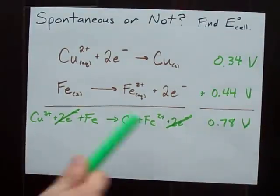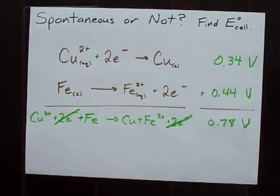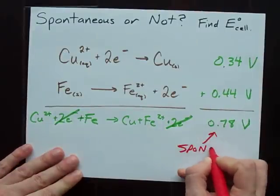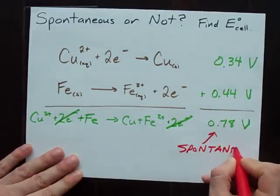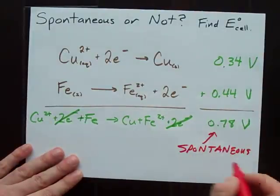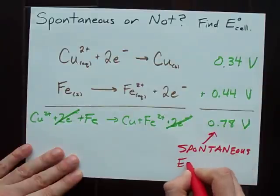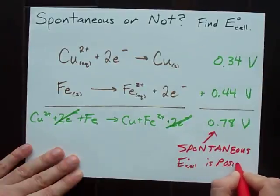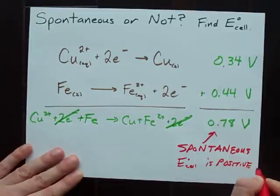This overall redox reaction has a standard cell potential of 0.78 volts. This is a spontaneous reaction or it happens exactly as I've written here because E cell is positive. Positive E cell means it happens as written.